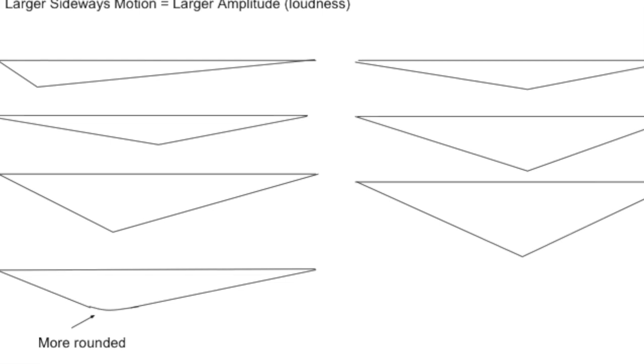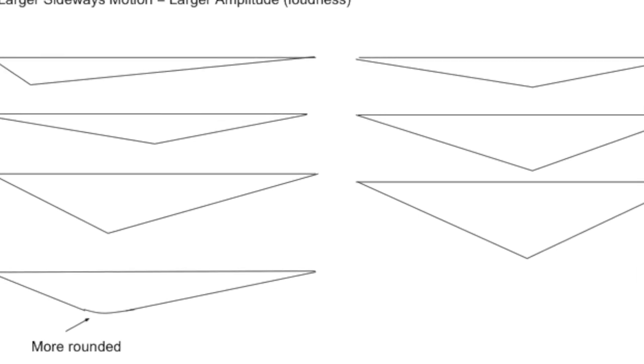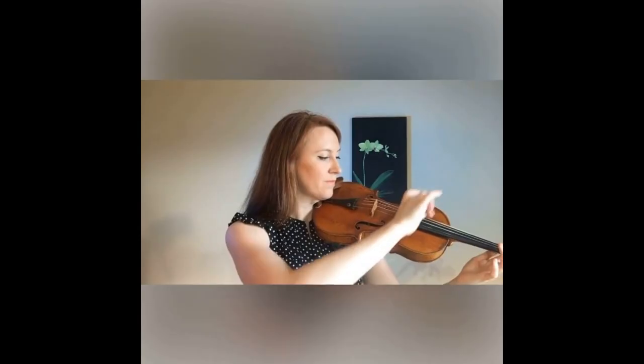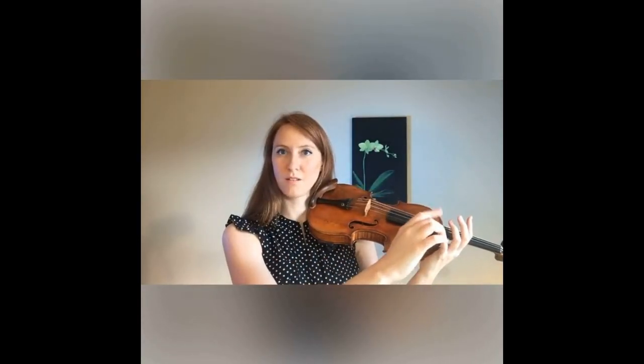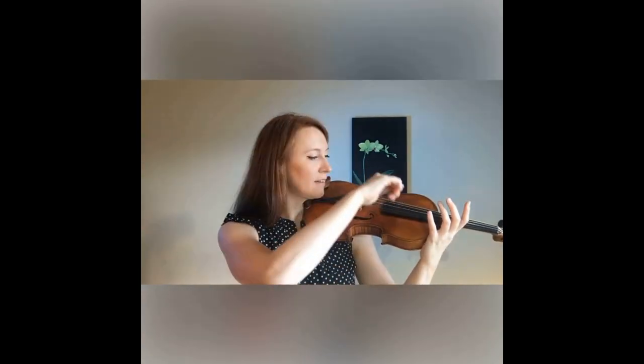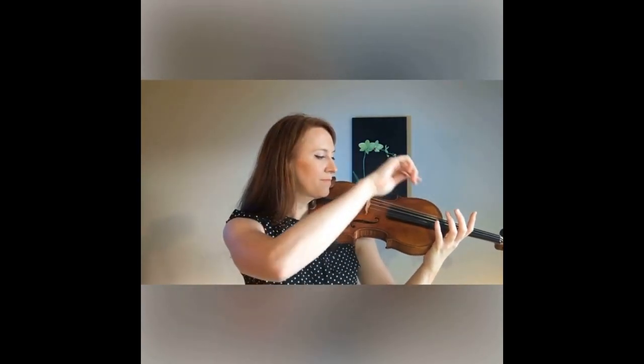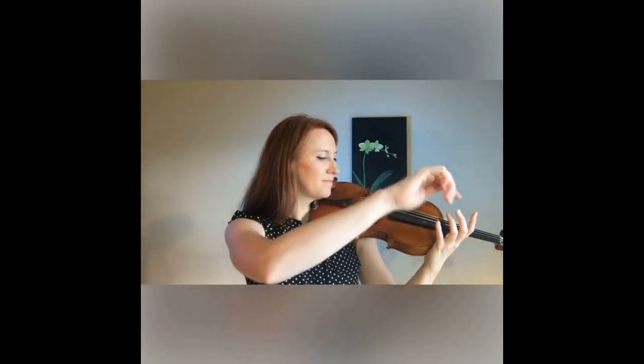So if I use my very padded middle finger, you can hear I get a very soft sound, whereas my first finger has a little bit more of a callus — and you can hear that that's a little bit brighter sound, more overtones.